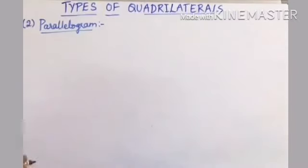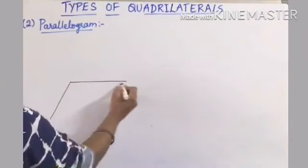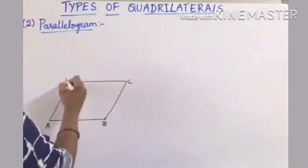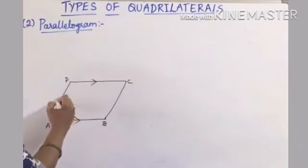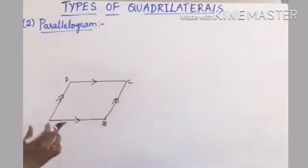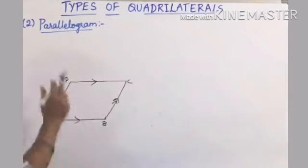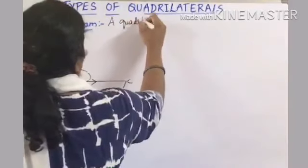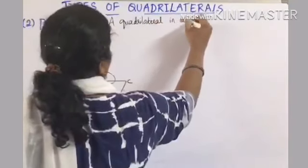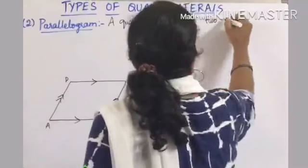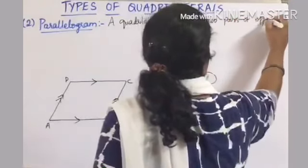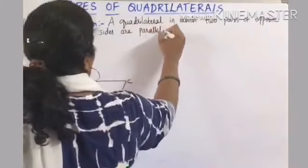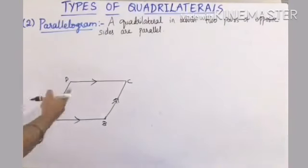The next type is a parallelogram — a quadrilateral in which both pairs of opposite sides are parallel. Here, AB is parallel to DC, and AD is also parallel to BC. When both pairs of opposite sides are parallel, we call it a parallelogram.